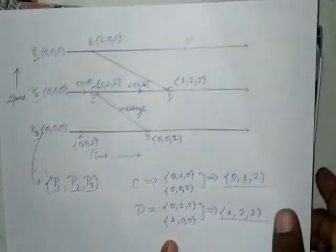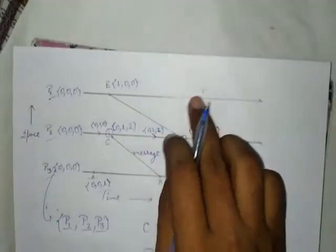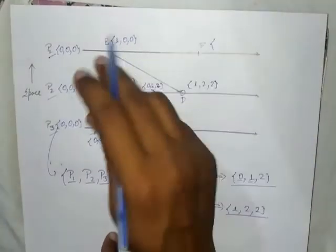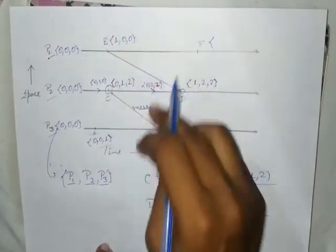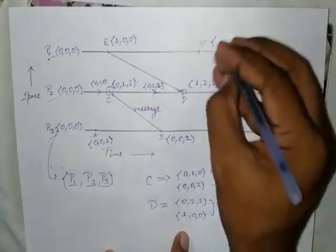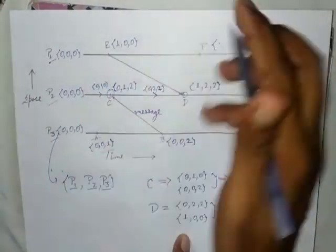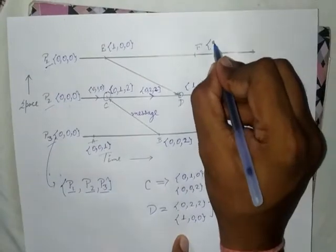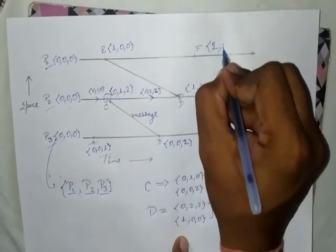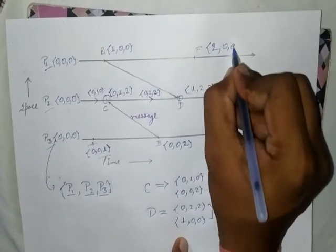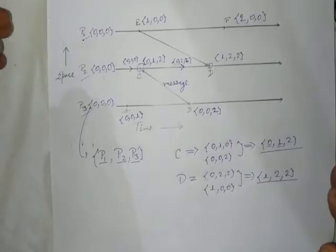Similarly for event F, it is straightforward — we just increase the P1 counter. So the vector for event F is [2, 0, 0].